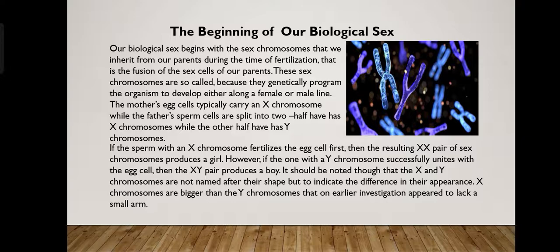Our biological sex begins with the sex chromosomes that we inherit from our parents during the time of fertilization — that is the fusion of the sex cells of our parents. Fertilization is when the sperm swims through the vagina and fertilizes an egg in the fallopian tube. That is the time of the fusion of our parents' sex cells.